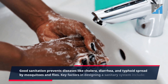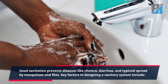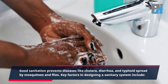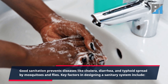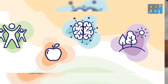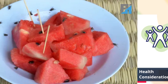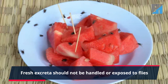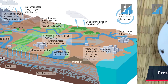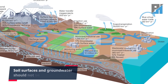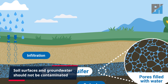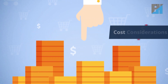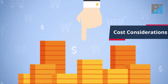Good sanitation prevents diseases like cholera, diarrhea, and typhoid, spread by mosquitoes and flies. Key factors in designing a sanitary system include health considerations: one, fresh excreta should not be handled or exposed to flies; two, soil surfaces and groundwater should not be contaminated.